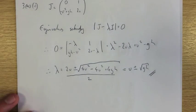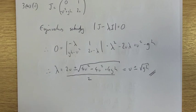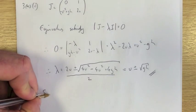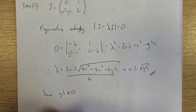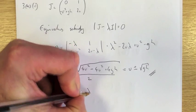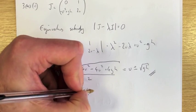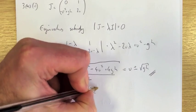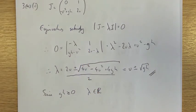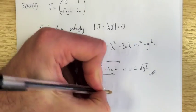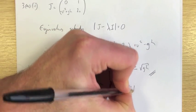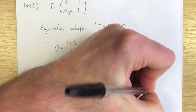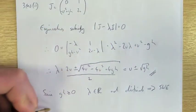Now, show that the system is hyperbolic. A system is hyperbolic when the eigenvalues are real and distinct. Since GH is always greater than or equal to zero, the square root is real, so lambda is real and distinct. This implies that the shallow water equations are hyperbolic.